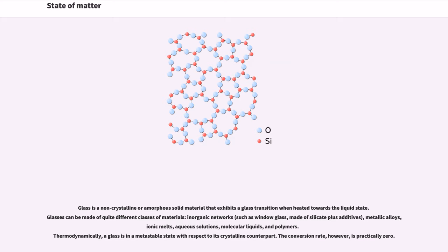Glass is a non-crystalline or amorphous solid material that exhibits a glass transition when heated towards the liquid state. Glasses can be made of quite different classes of materials: inorganic networks, such as window glass, made of silicate plus additives, metallic alloys, ionic melts, aqueous solutions, molecular liquids, and polymers. Thermodynamically, a glass is in a metastable state with respect to its crystalline counterpart. The conversion rate, however, is practically zero.